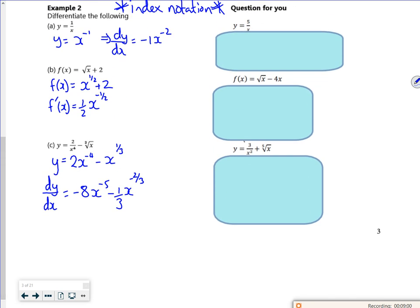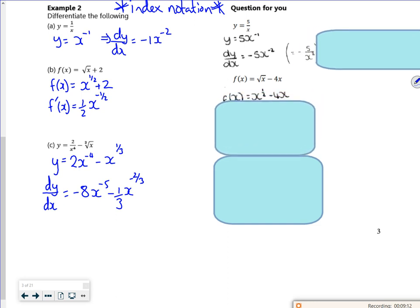So there's some here. I've got one minute left on this. So you do 5x to the minus 1, so it becomes minus 5x to the minus 2. We do x to the half minus 4x, so it becomes a half x to the minus a half minus 4.